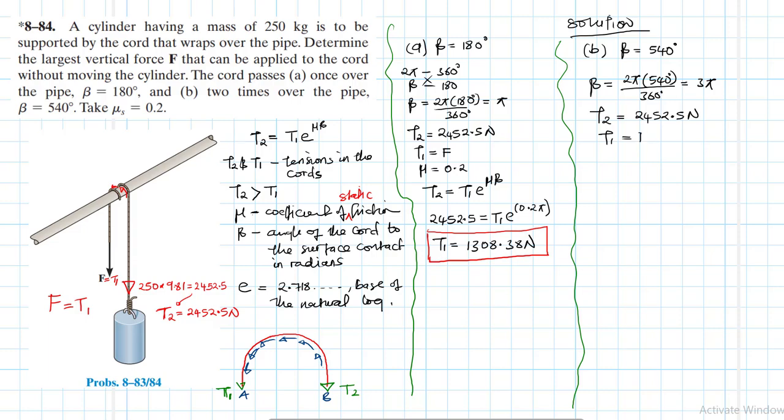We know what beta is. T2 still maintains, nothing changes, 2452.5 newtons. T1 also maintains, mu maintains. The only thing that changes is just the beta, which is the angle over the contact surface, which in our case is the pipe. So writing the equation, we have 2452.5 equals T1 times e to the power 0.2 times 3 pi.